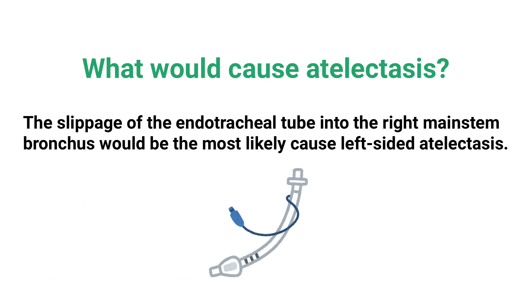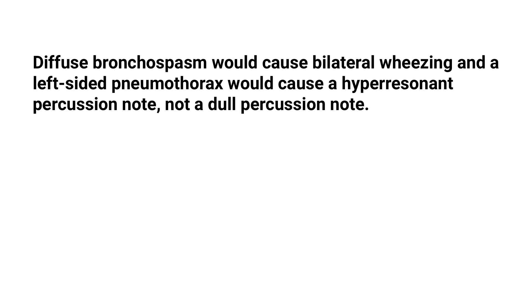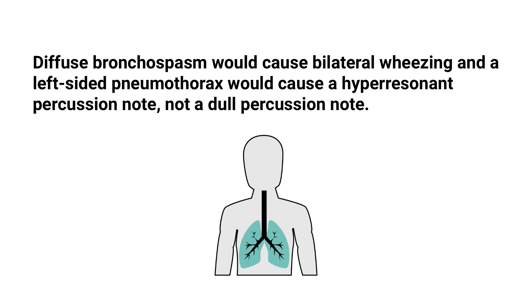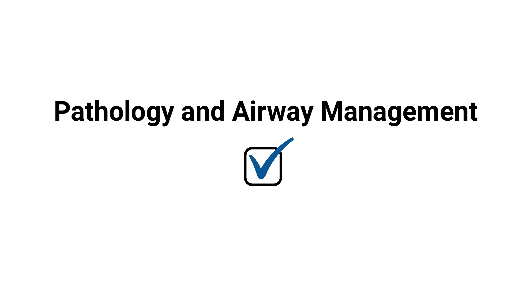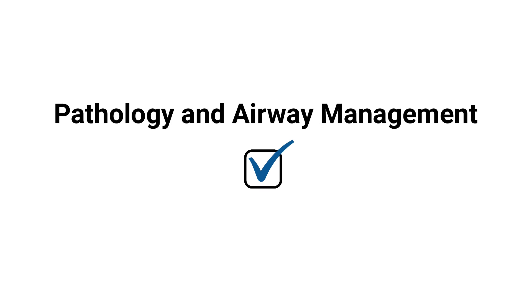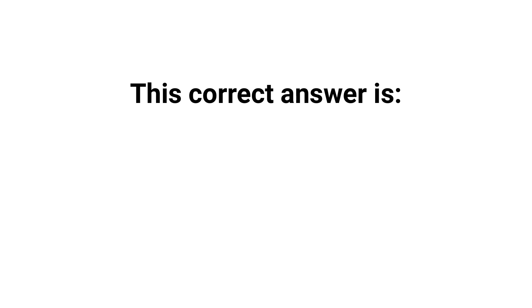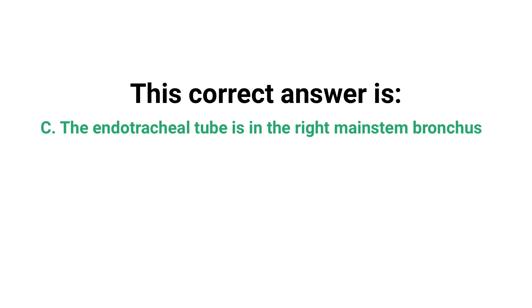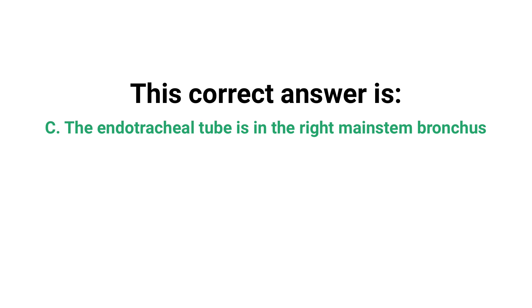So now you have to think: what would cause atelectasis? In this case, the slippage of the endotracheal tube into the right mainstem bronchus would be the most likely cause of left-sided atelectasis. Diffuse bronchospasm would cause bilateral wheezing, and a left-sided pneumothorax would cause a hyper-resonant percussion note, not a dull percussion note. So by using what we know about pathology and airway management, as well as the process of elimination, the correct answer has to be C — the endotracheal tube is in the right mainstem bronchus.